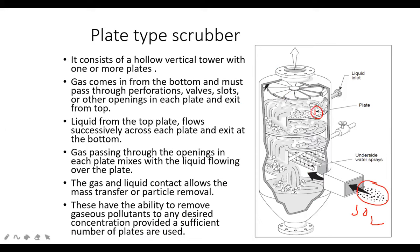In a plate-type scrubber, you pass air through distributors. The plates are perforated - they have perforations whose size can vary according to applications. The gas passes through the perforations. You then pass the liquid from the top; it enters onto a plate and spreads across it.